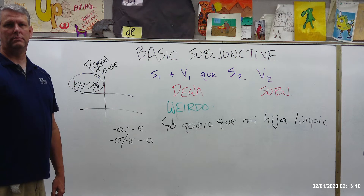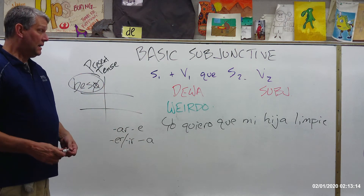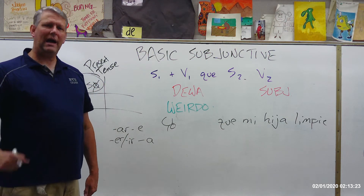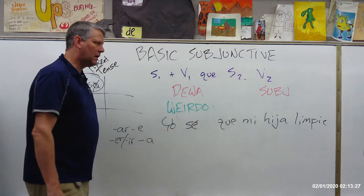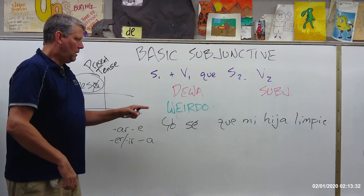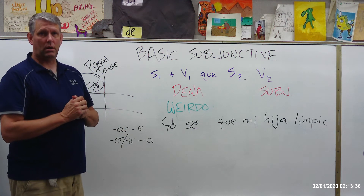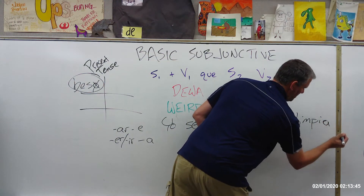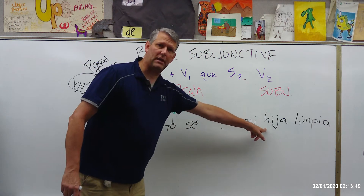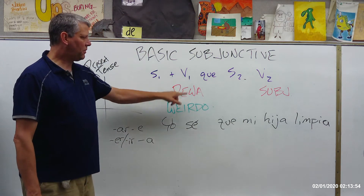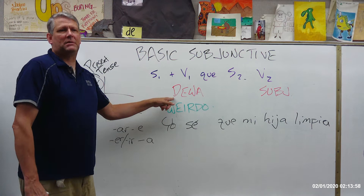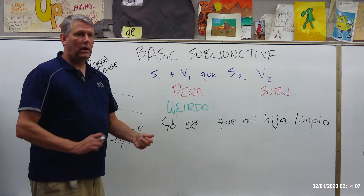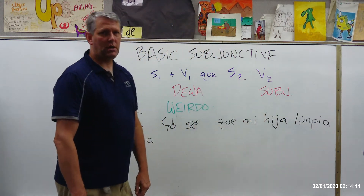And that's a sentence with the subjunctive — all the conditions have been met. Now let's say instead of 'I want her to do it,' I say 'I know that my daughter cleans her room — I know it for a fact': yo sé que mi hija... Would that require the subjunctive? No, it does not. I would have to change that E back to an A. Why? Well, I have two different subjects — I and my daughter — but this first verb, knowing, doesn't express doubt. This is the opposite of doubt. I'm not expressing DIWA or WEIRDO, and so I do not use the subjunctive.